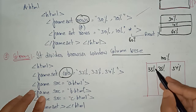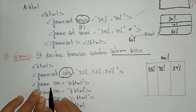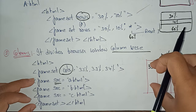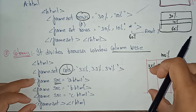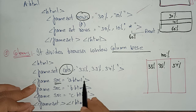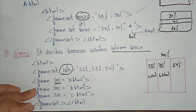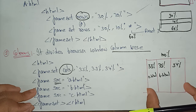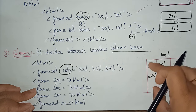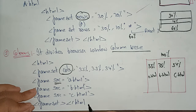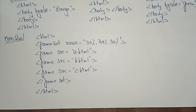In each frame you can call a different HTML file using the frame src attribute. For example, frame src equal to a.html — the a.html file opens in that frame. Similarly, b.html in the second frame and c.html in the third. All files should be saved in the same folder. When you open the frameset page, each file's content appears in its corresponding column.